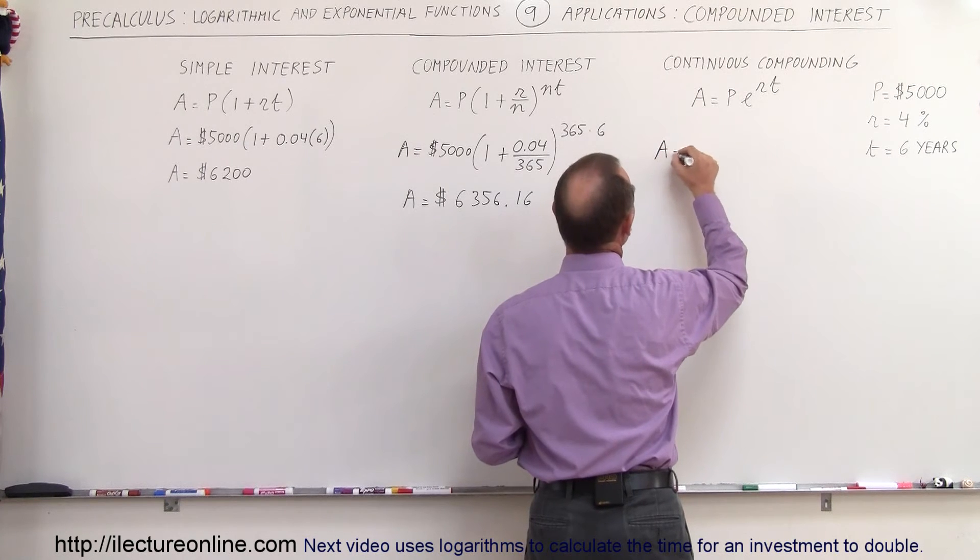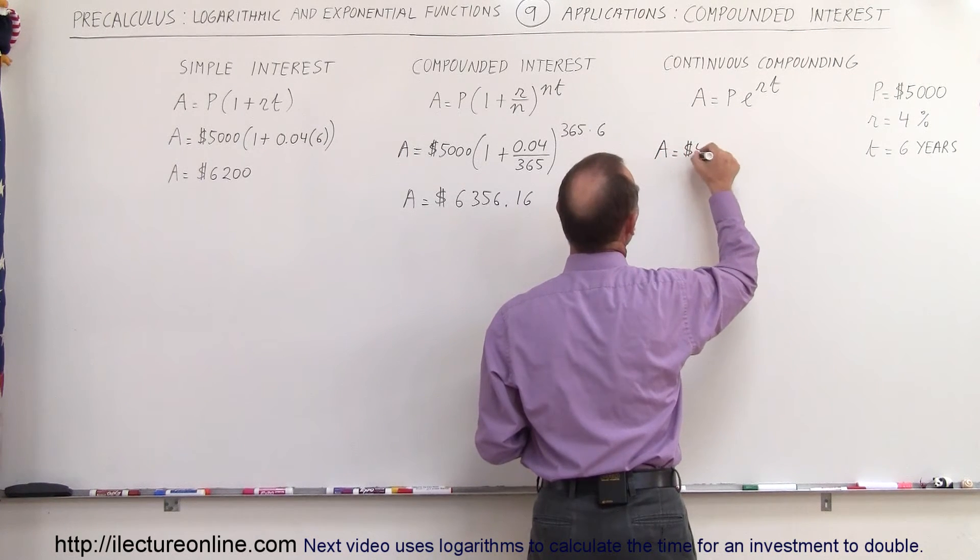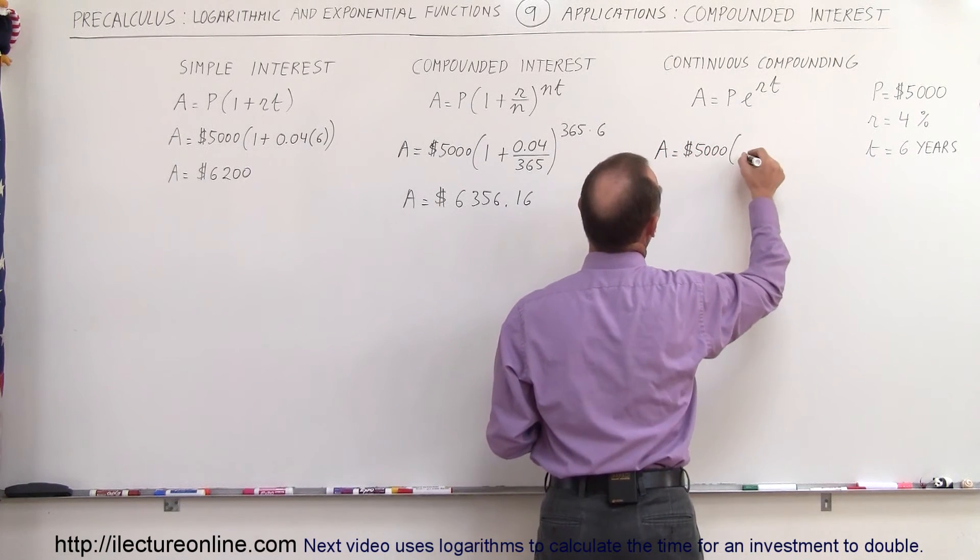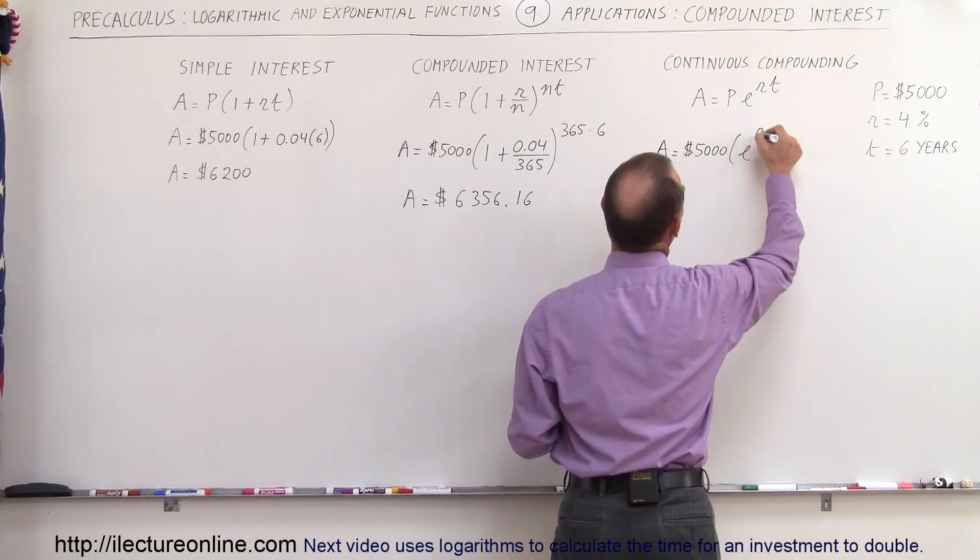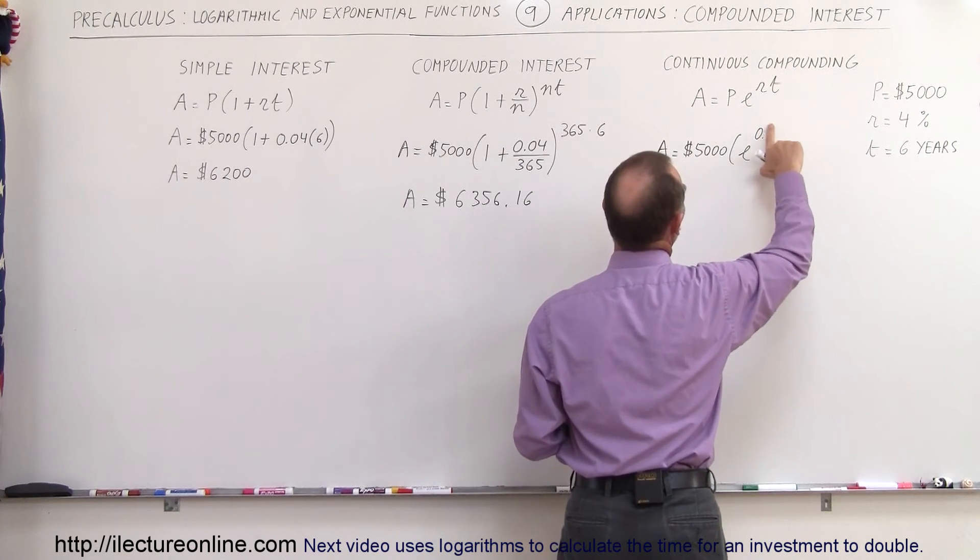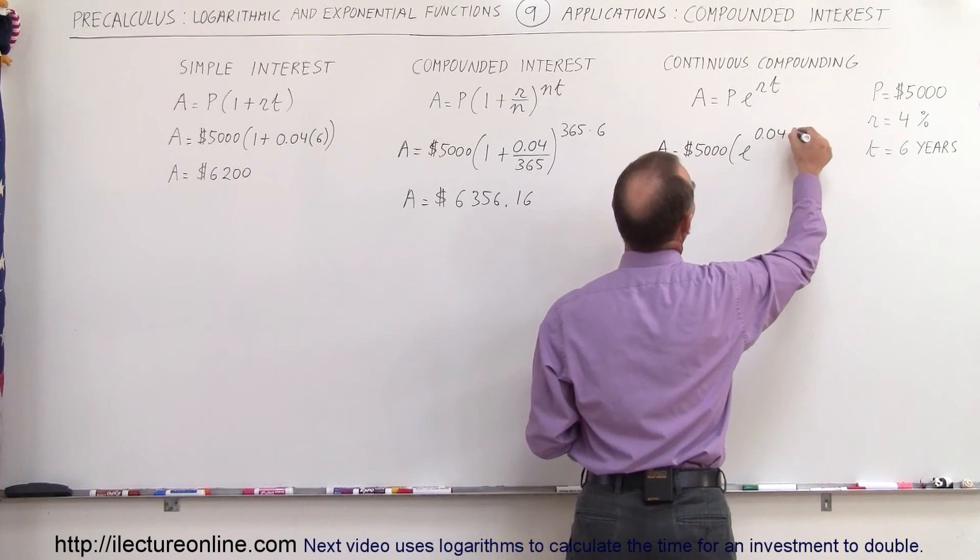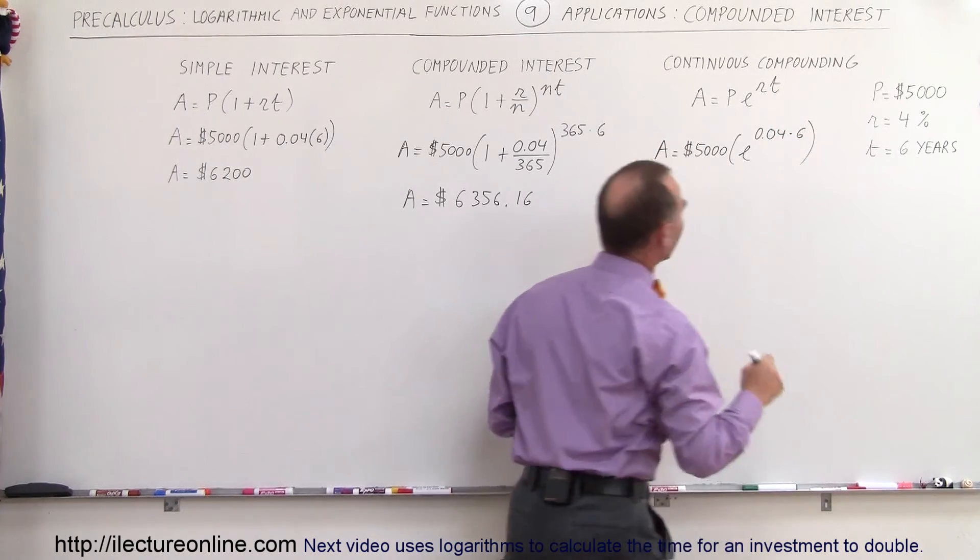So in this case, we have the amount accumulated is equal to the principle invested, $5,000 times e to the rate, 0.4... oh no, that would be tremendous interest, 0.04 times 6, like that.